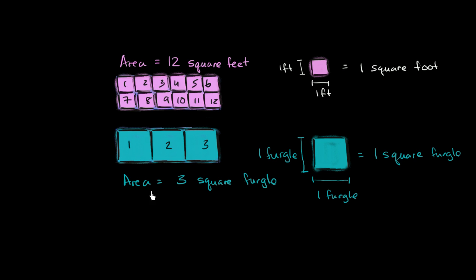So it's the same exact area. Three square fergals is equal to twelve square feet, covering the exact same area. Now what I encourage you to think about is, how many square feet make a square fergal?